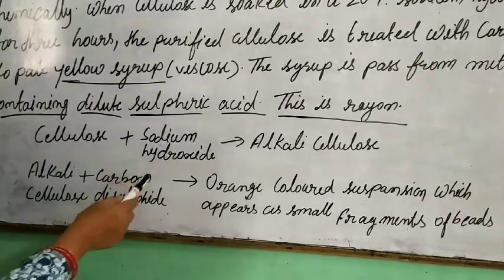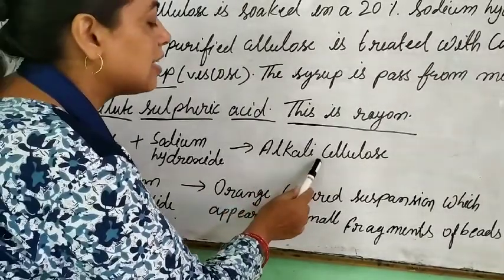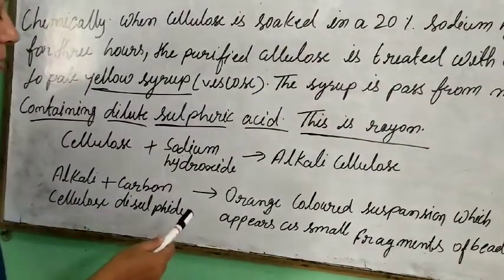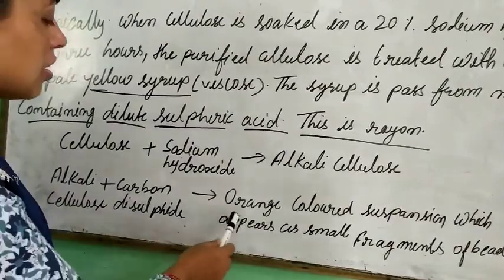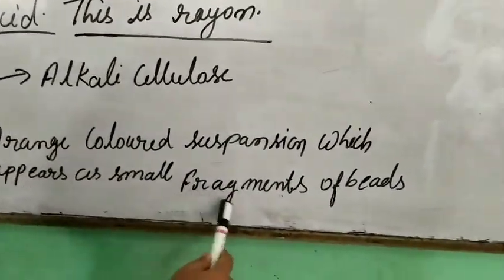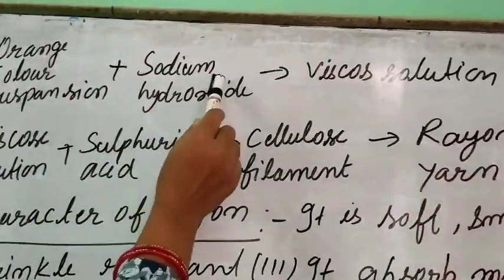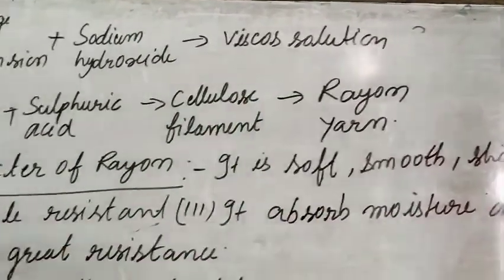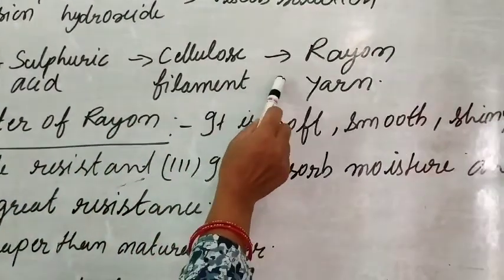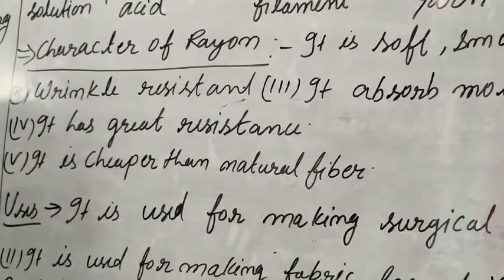Let's see the equation for making Rayon. Cellulose plus sodium hydroxide — when mixed together, they make alkali cellulose. In the next step, alkali cellulose plus carbon disulfide — when combined, they make an orange color suspension appearing as small fragments. Then, alkali cellulose plus sodium hydroxide makes a viscous solution. Finally, viscous solution plus sulfuric acid produces cellulose fragments, and this is Rayon yarn. Rayon yarn has very long resistance and is very smooth and shiny.